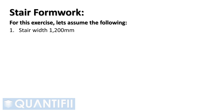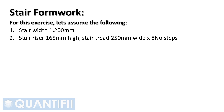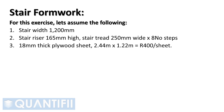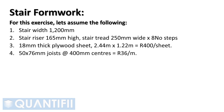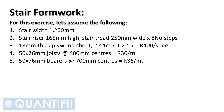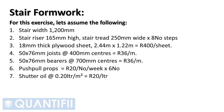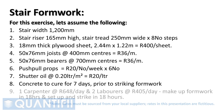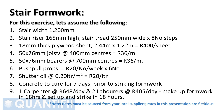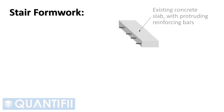Our final formwork analysis will be for stairs. Assumptions: stair width 1.2 m; riser 165 mm high; tread 250 mm wide by 8 steps. 18 mm thick plywood sheets, 2.44 m × 1.22 m, at 400 Rand per sheet. 50 × 76 mm joists at 400 mm centers at 36 Rand per meter. 50 × 76 mm bearers at 700 mm centers at 36 Rand per meter. Push-pull props at 20 Rand per number per week, 6 props. Shutter oil at 0.2 L/m² at 20 Rand per liter. Concrete to cure for 7 days prior to striking. One carpenter at 648 Rand per day and two laborers at 405 Rand per day can make up formwork in 18 hours and set up and strike in 18 hours.